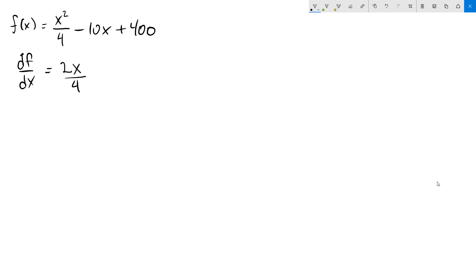For the next one, x to the 1, subtract 1 from that, we get 0, so that x just drops out and we're just left with the 10. And 400 is just a constant, so the derivative of that is going to be 0. We set this equal to 0. This is our first order condition.